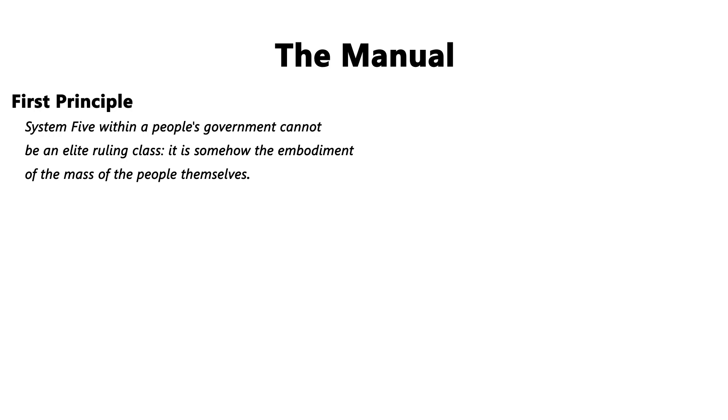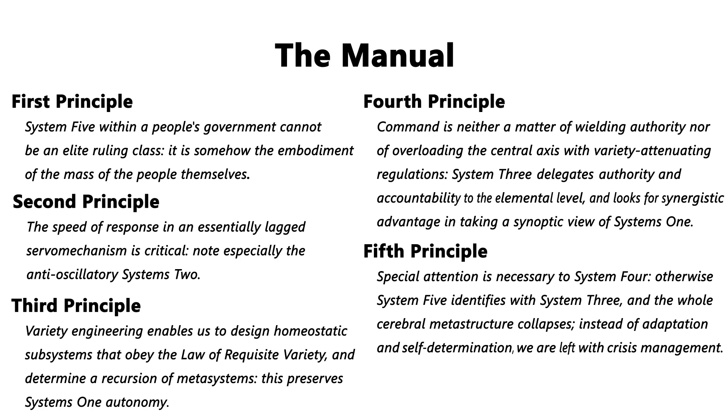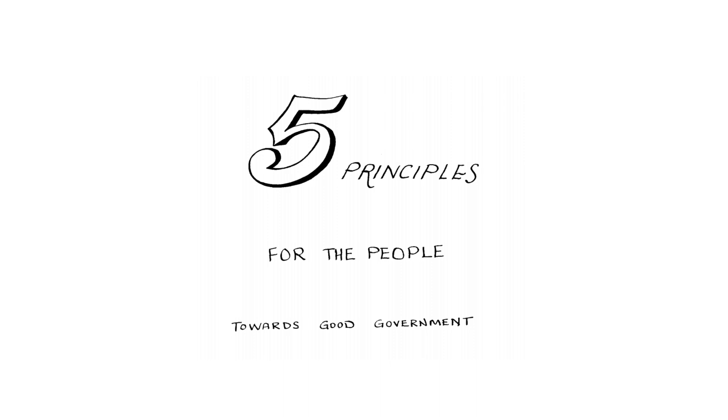Beer eventually settled on five statements. These would be the keys to building a cybernetic government. He then further simplified these ideas, even going so far as to draw cartoons to help make the principles more accessible.